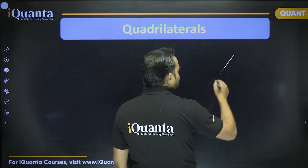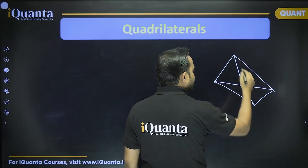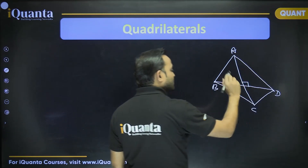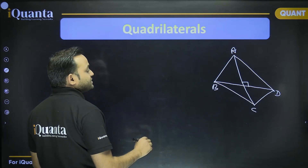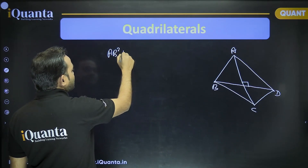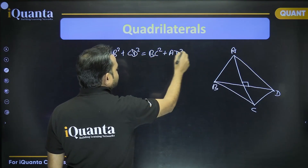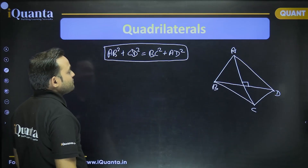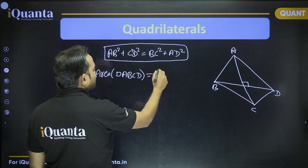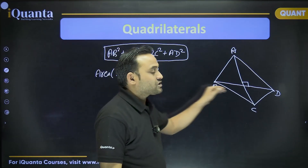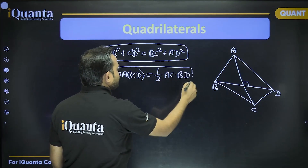There is also another important property: if two diagonals of a quadrilateral are perpendicular to each other — say AC and BD are perpendicular — then AB² + CD² = BC² + AD². Additionally, the area of quadrilateral ABCD in this case equals half the product of the diagonals, that is, half of AC × BD. These are the basic formulae you need to know.